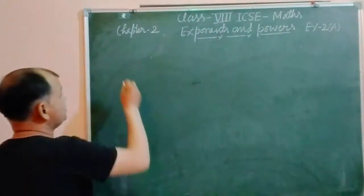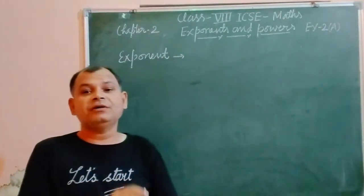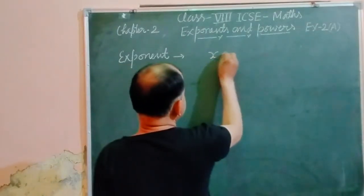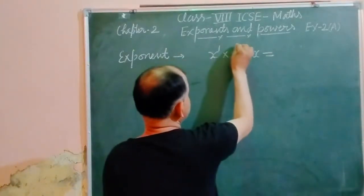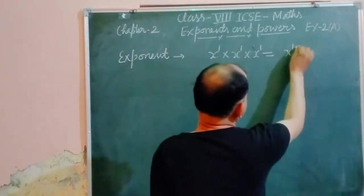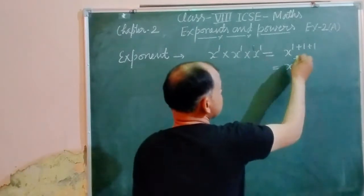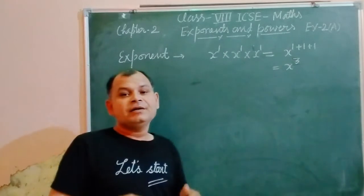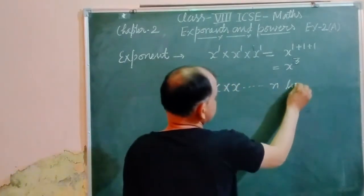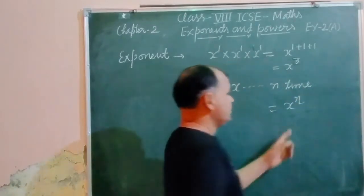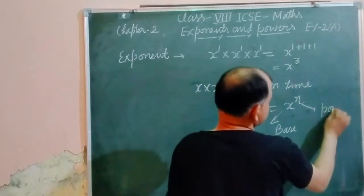First we discuss what is x to the power n. When we multiply a number many times, like x times x times x — if we multiply 3 times, then the powers 1, 1, 1 are added, so we get x to the power 3. When a number is multiplied by itself n times, we get x to the power n. Here x is called the base and n is called the power.